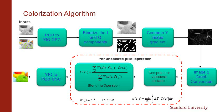Let's take a closer look at the colorization algorithm. The input is a monochrome image and a color scribbled image. We first convert the RGB color image to YIQ color space to extract the luminance and chrominance components. We then binarize the I and Q components to generate a chroma mask that gives us the colored and uncolored pixels. We then compute the image gradient from the luminance Y component, which is used to construct a graph for the computation of distance values.